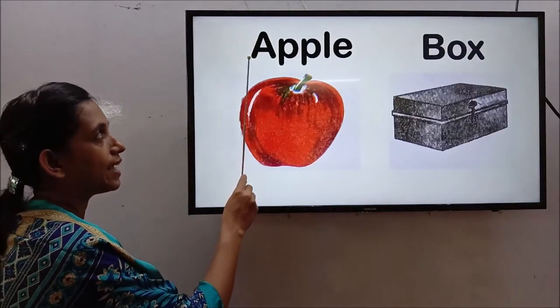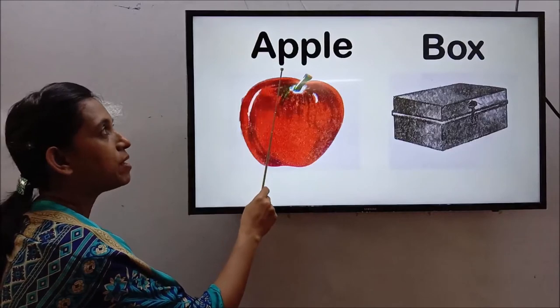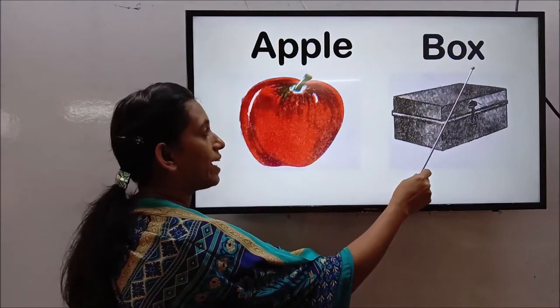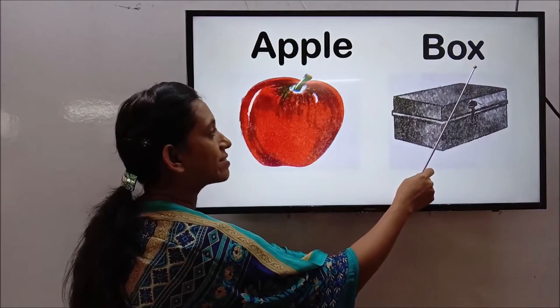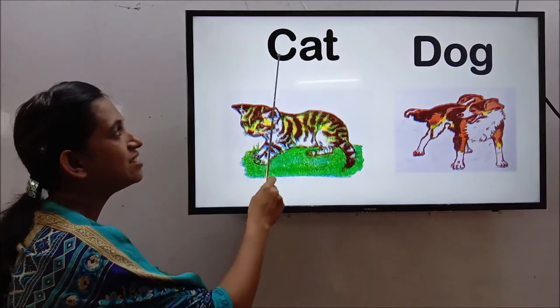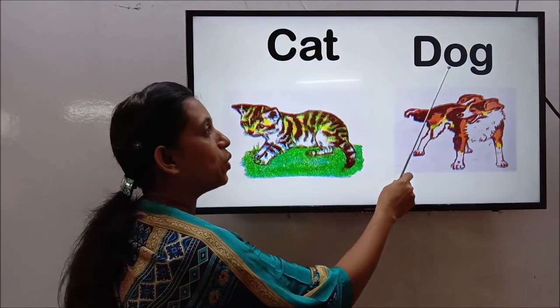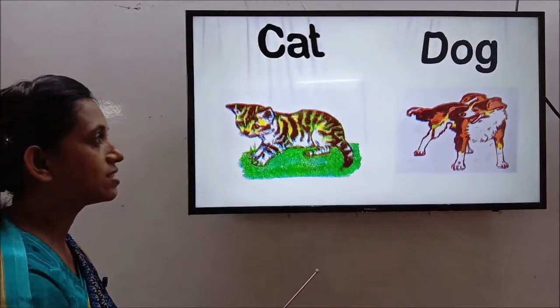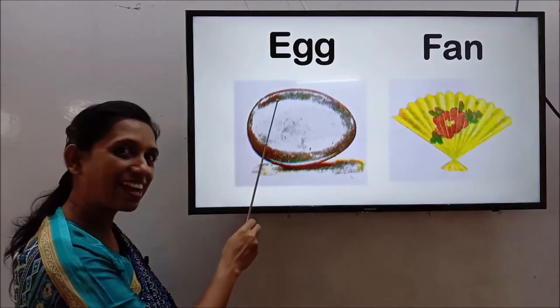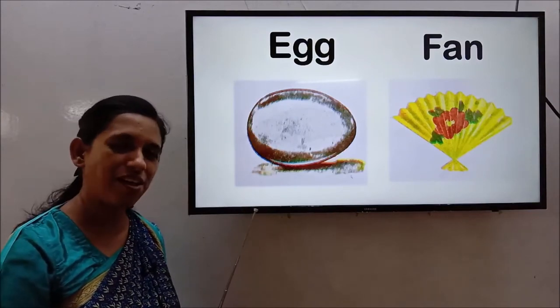Now we will read a new page. A-P-P-L-E, apple. A-P-P-L-E, apple. Next one, B-O-X, box. B-O-X, box. C-A-T, cat. C-A-T, cat. D-O-G, dog. D-O-G, dog. Okay, let's see what's there. Yes, can you see what's coming? Yes, egg. You like egg, right?